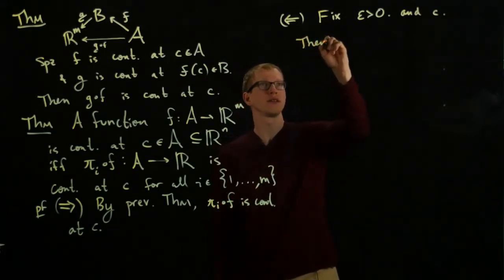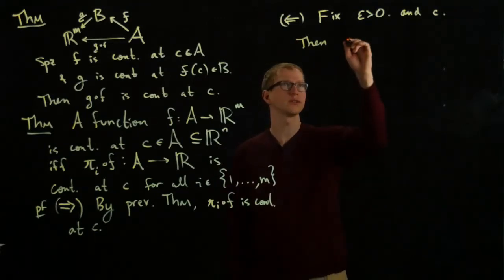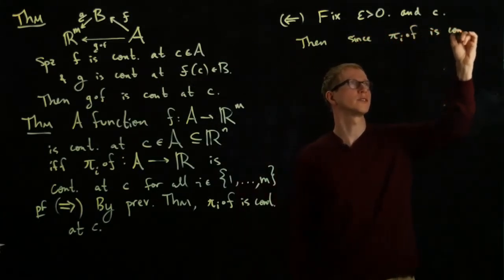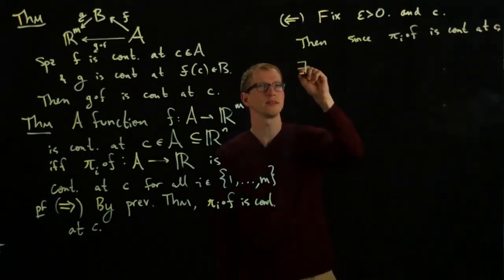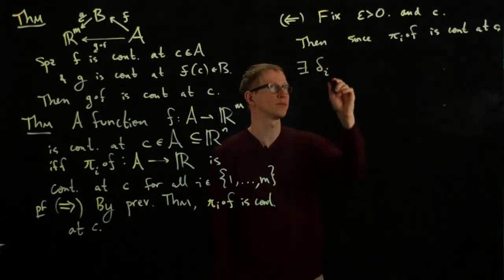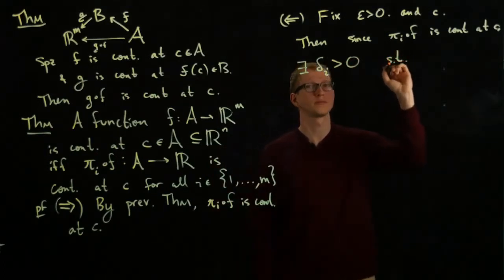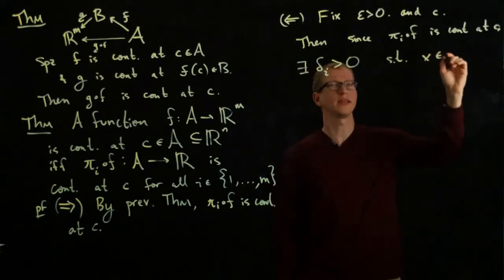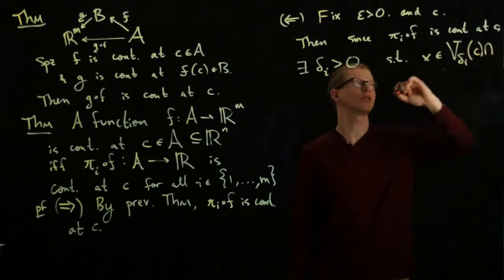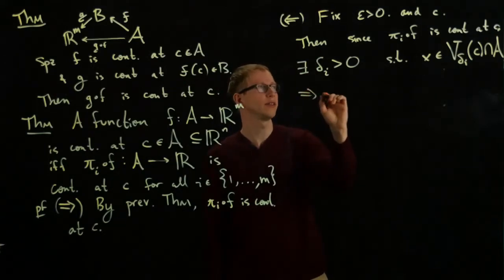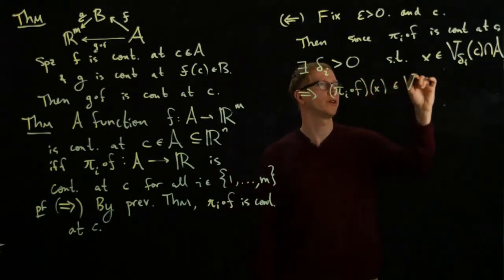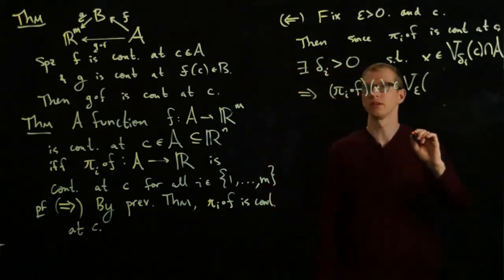So now, then, we assume that the component functions are continuous, then since pi_I composed of F is continuous at C, there exists a delta, and let's call it delta_I, because this will depend on the projection functions that we look at, there exists a delta_I such that X is in the neighborhood around delta_I, around the point C, provided that it's also in the domain A, implies that the projection at X is in the neighborhood epsilon around the image of C.